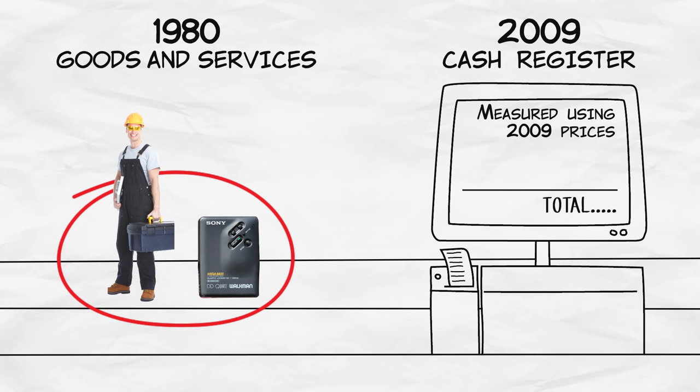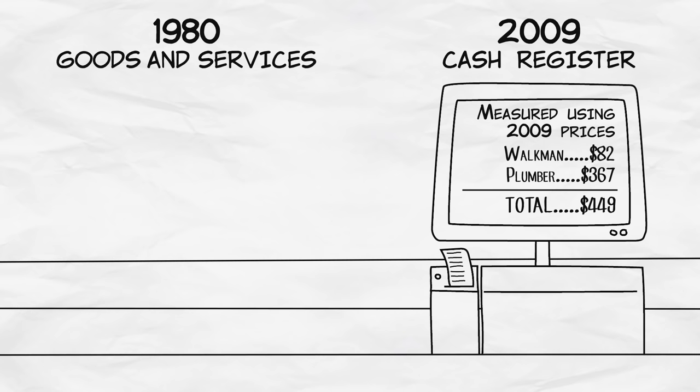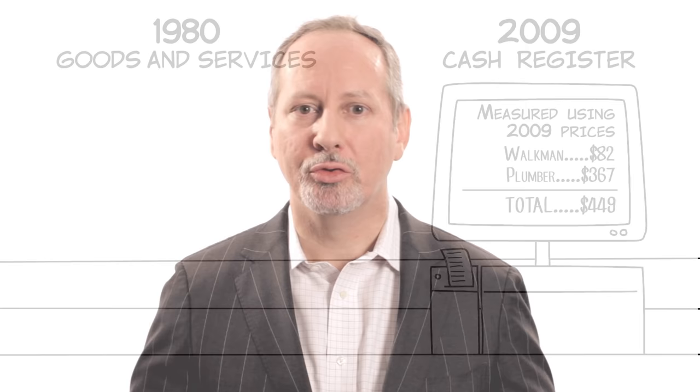Real GDP measures the second type of growth. In the real GDP statistic, it controls for inflation by adding up all the goods and services produced in an economy using the same set of prices over time. Real GDP tells us: if the prices of goods and services hadn't changed, how much would GDP have increased or decreased? Real GDP is typically what we really care about.